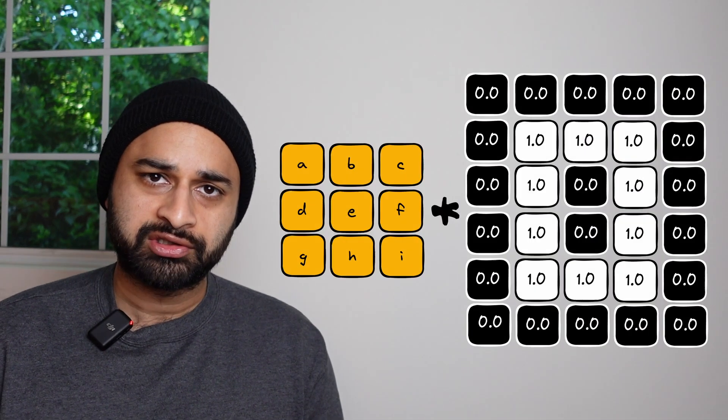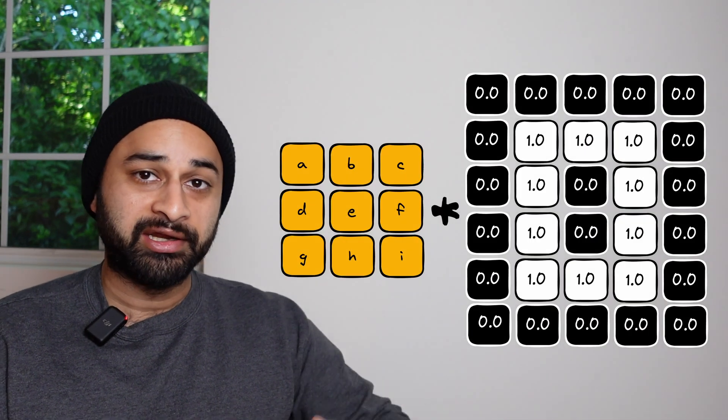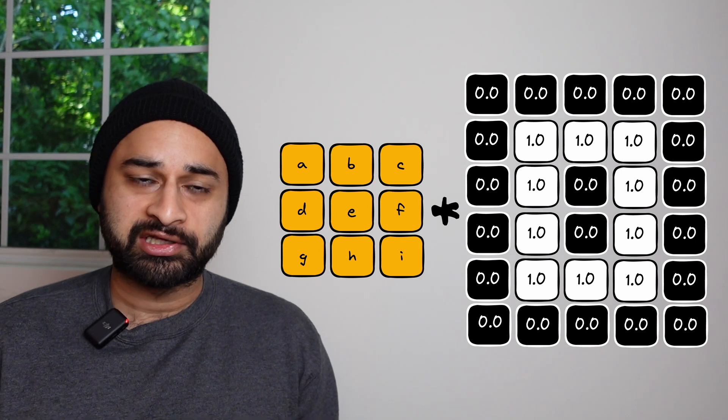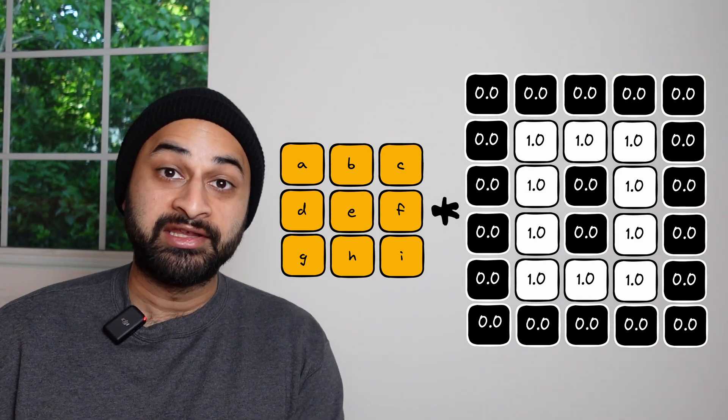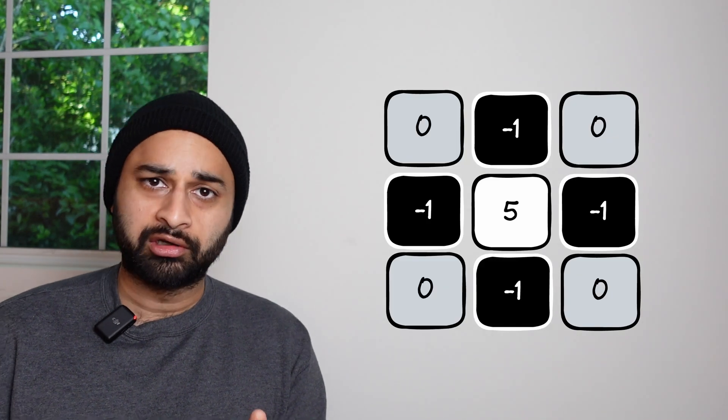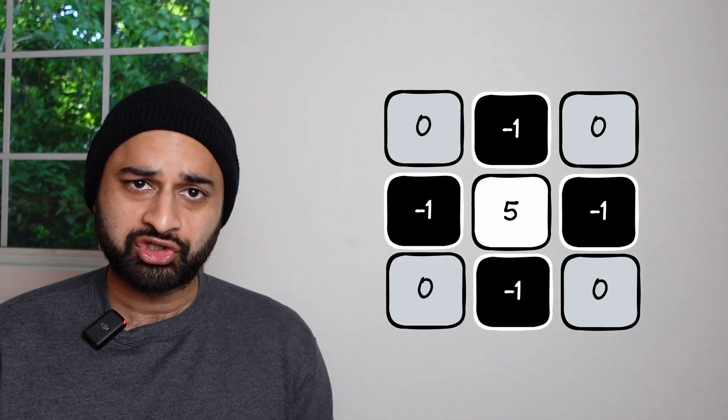It was super cool to learn that we could do these intuitive operations called convolutions on these giant image matrices in order to do real-world things like blur images or detect the edges in an image. But there was always this one operation that eluded me — when I learned about it, it didn't make sense why the convolution kernel looked the way it did. And that was sharpening an image.